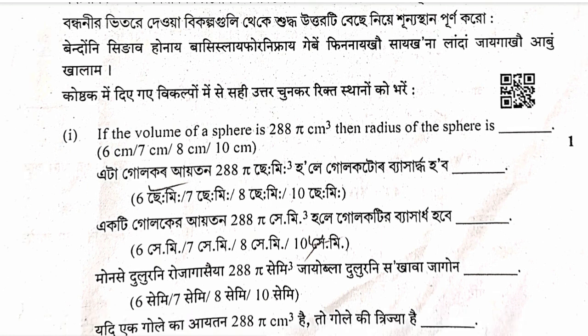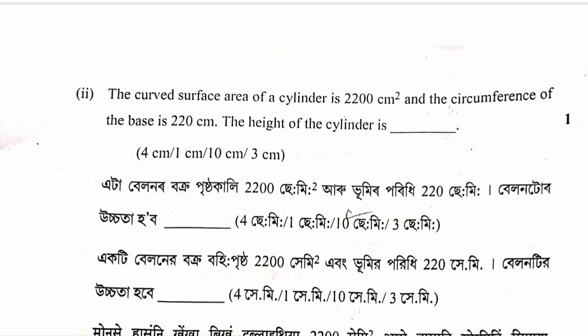Question: The total surface area of a cylinder is 2200 square centimeters and the circumference of the base is 220 centimeters. Find the height of the cylinder. Using TSA equals circumference into h plus radius, solving gives h equals 2200 divided by 220 equals 10 centimeters.